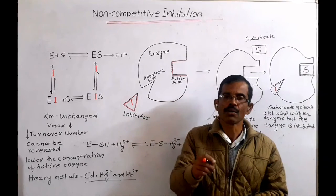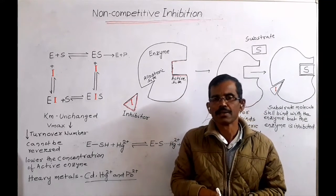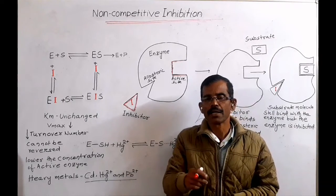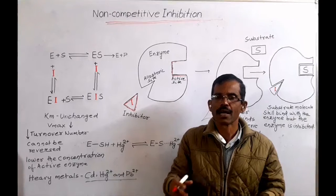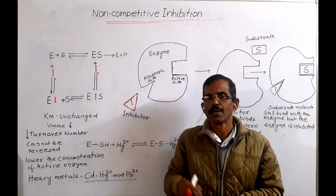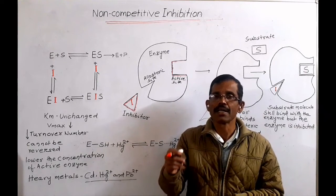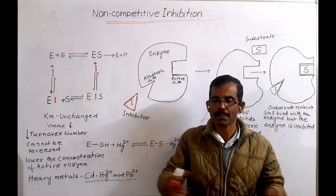Then where does the non-competitive inhibitor bind? The inhibitor binds at a site other than the active site known as allosteric site. Because the substrate binding site and inhibitor binding site are separate.